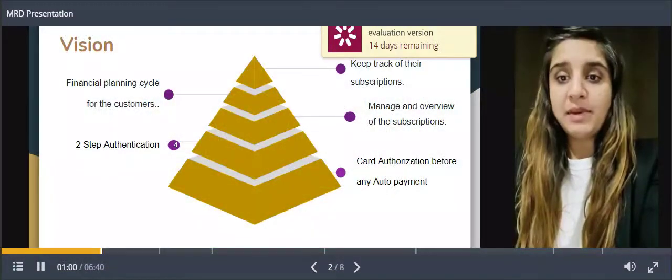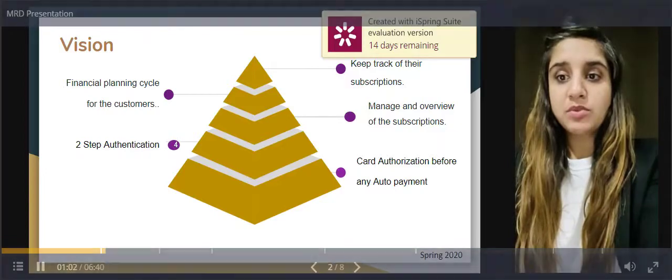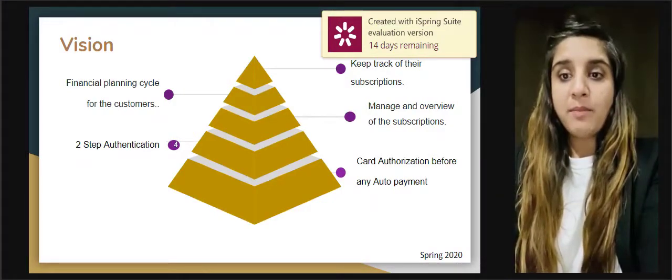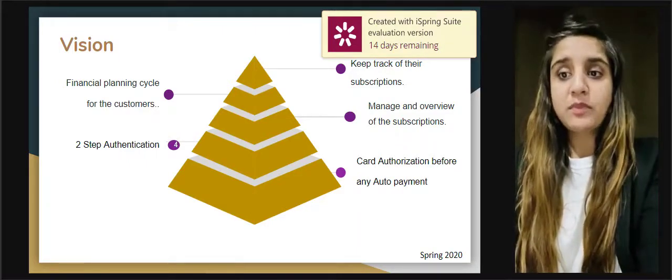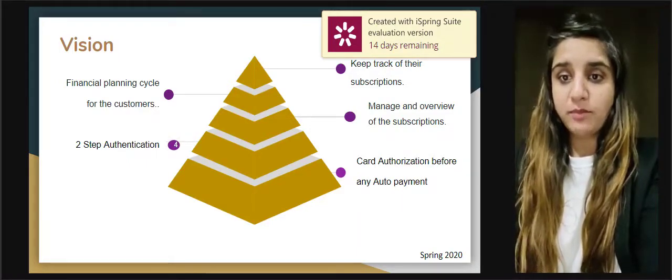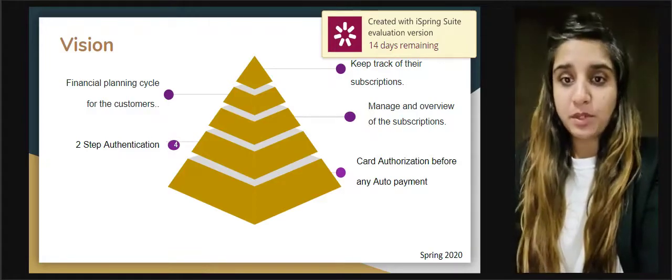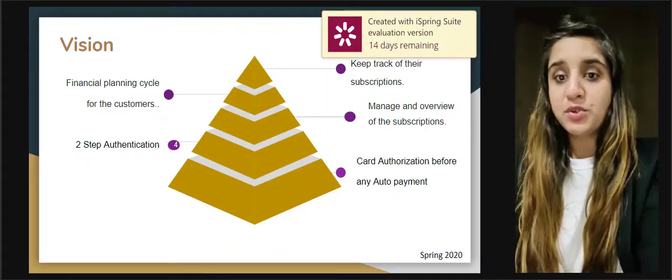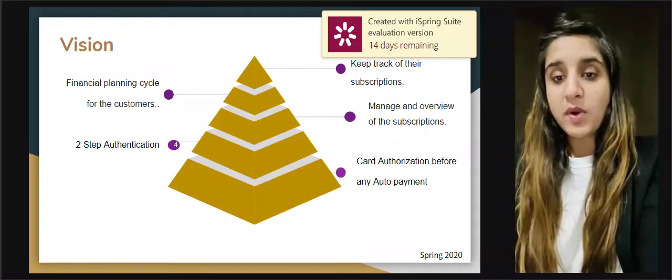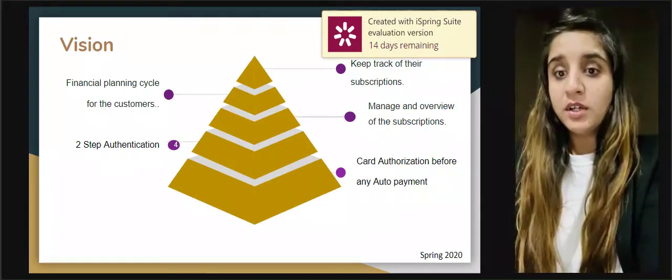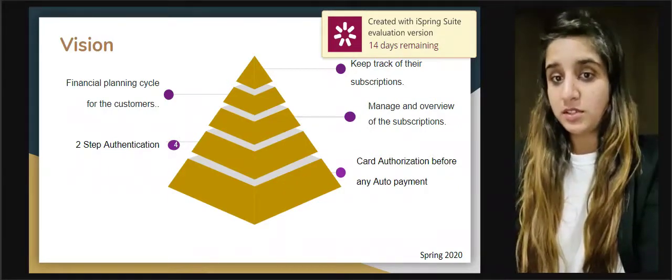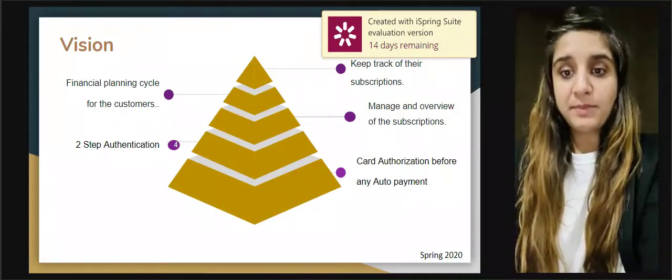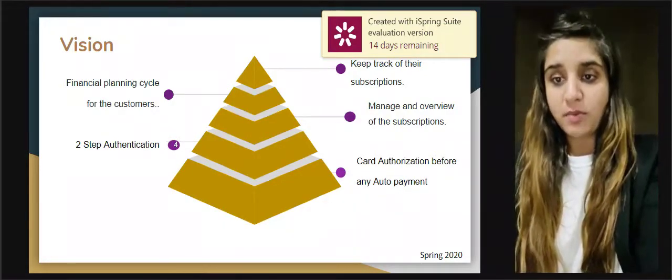Our proposed application, hashtag Smart Subscription, aims to be the one-stop solution for all of them by bringing them together as one app which will provide a platform to manage and overview subscriptions in one place. Our app will add additional features which other apps do not provide, such as 24/7 customer support, two-step authentication for customers, and card authorization before every auto payment.